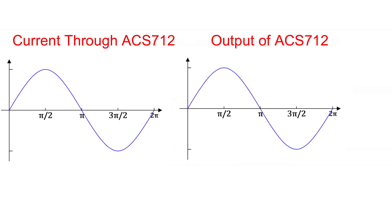ACS712 has an offset voltage of 2.5 volts when there is no current passing through it. So in case of sinusoidal current, the output voltage of current sensor varies around 2.5 volts and goes to the maximum of 3.5 volts when there is a peak of 5 ampere and goes to the minimum of 1.5 volts when there is a peak of negative 5 ampere.